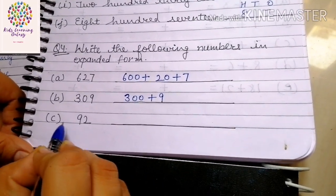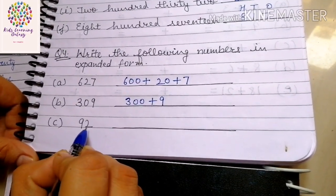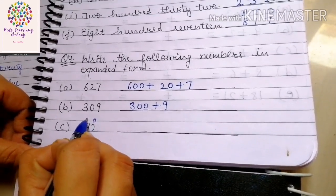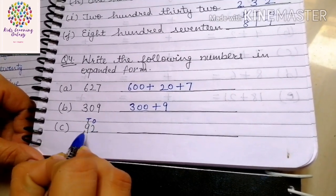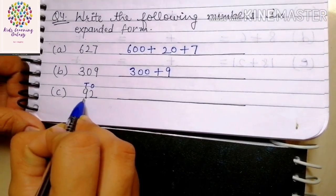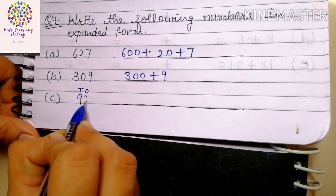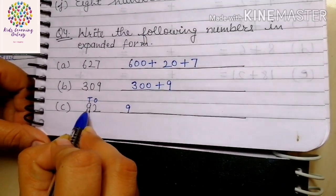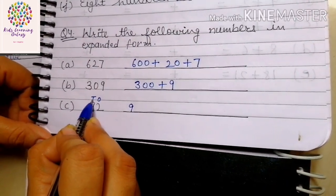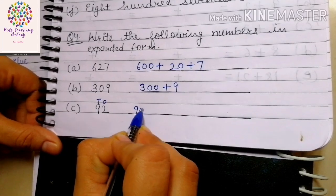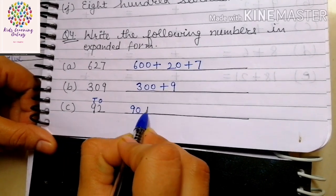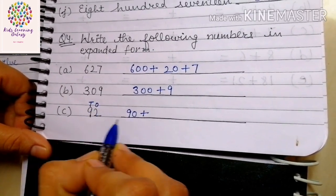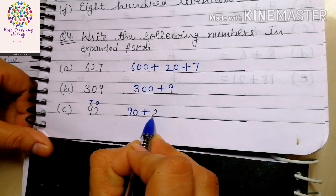Part C is 92. First write down the places: ones and tens. The expanded form of 92 is: 9 multiplied by 10 is 90, plus 2 multiplied by 1 is 2. So the expanded form is 90 plus 2.